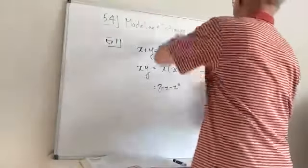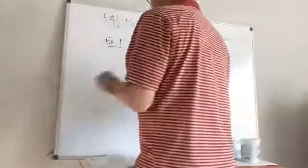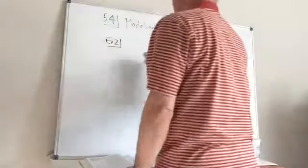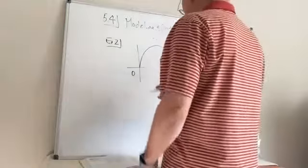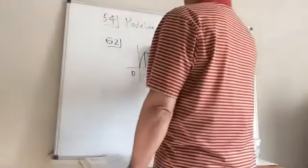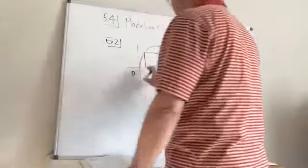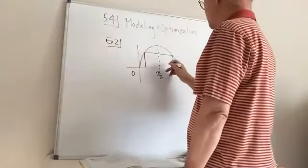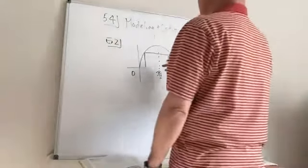Let's do example number two. A rectangle is to be inscribed under one arch of the sine curve. The sine curve goes from zero to pi, and we're going to put a rectangle in there. This point is going to be pi over two. We want to find the largest rectangle we can put in here, so we need to come up with a way to represent the area of the largest area rectangle.